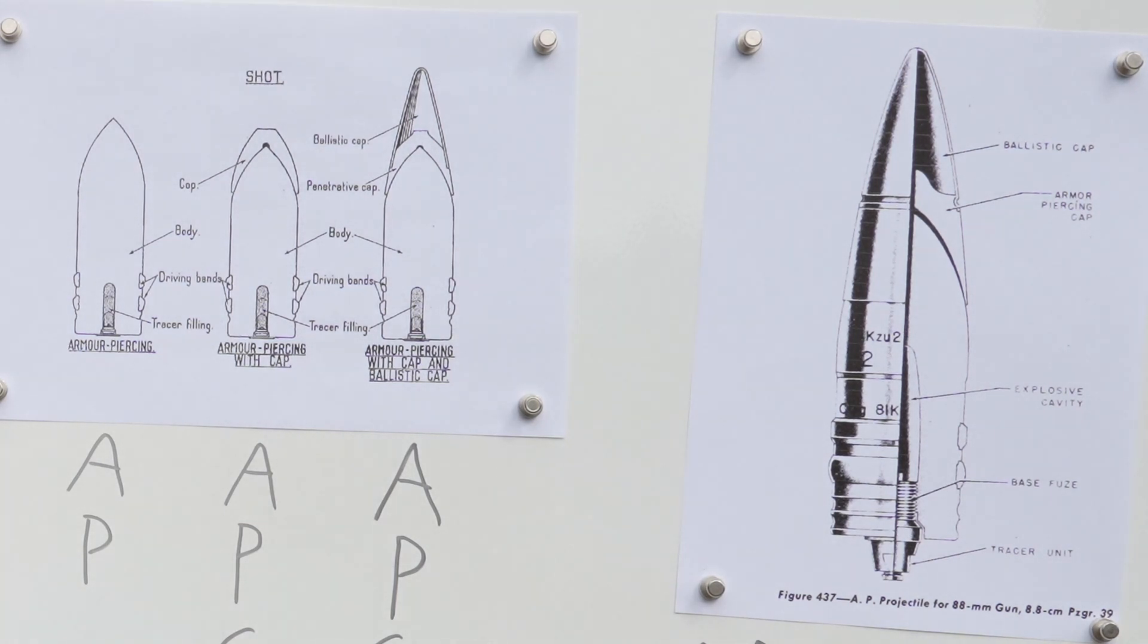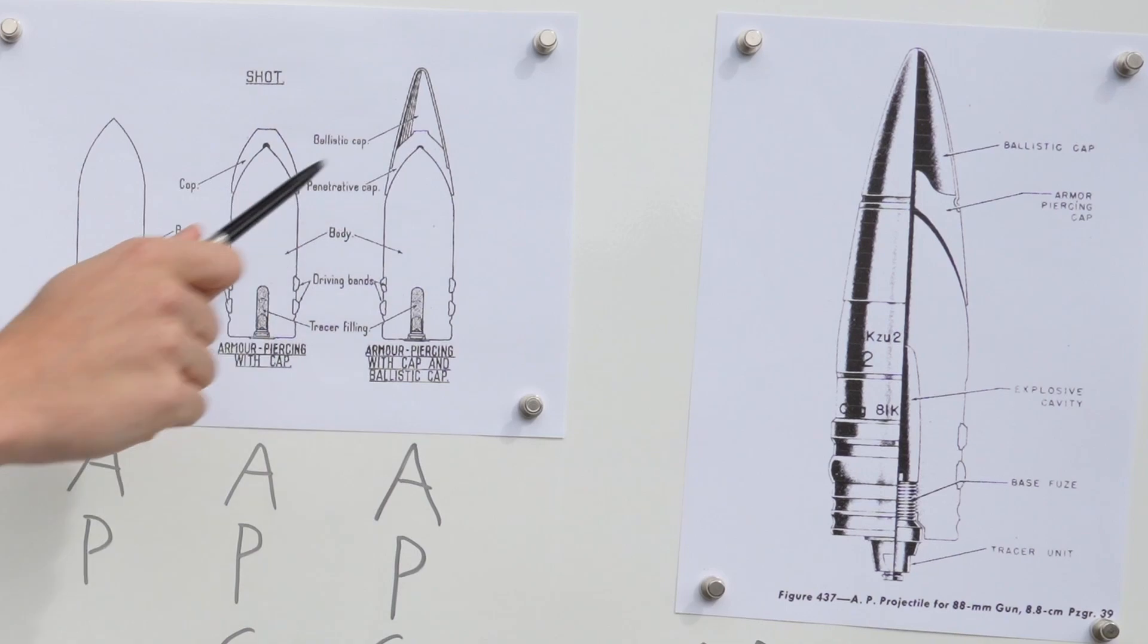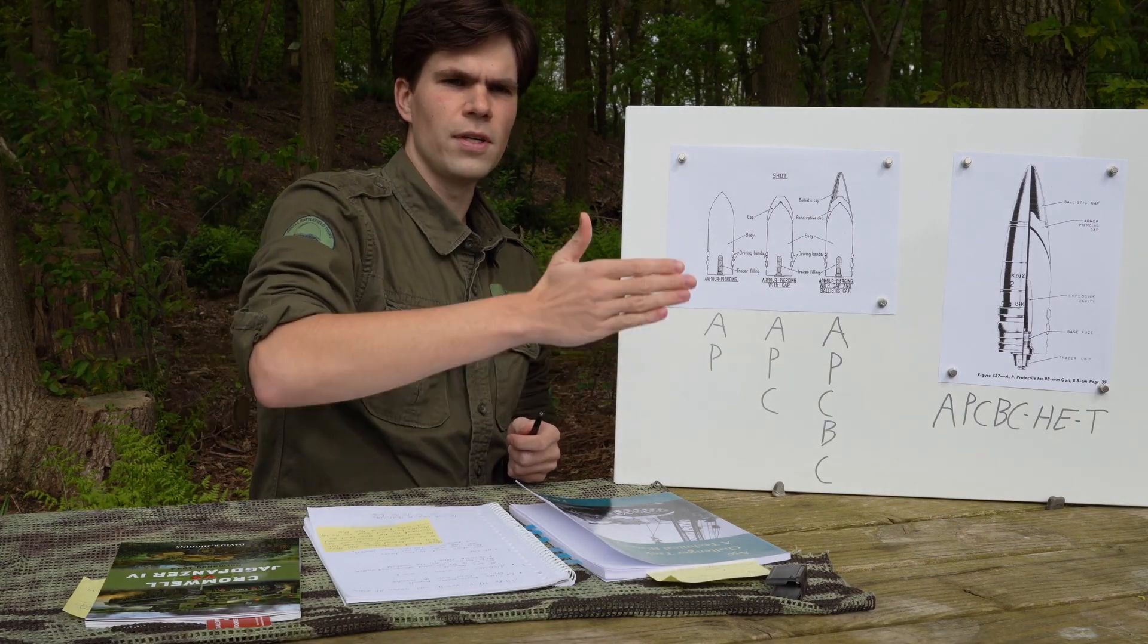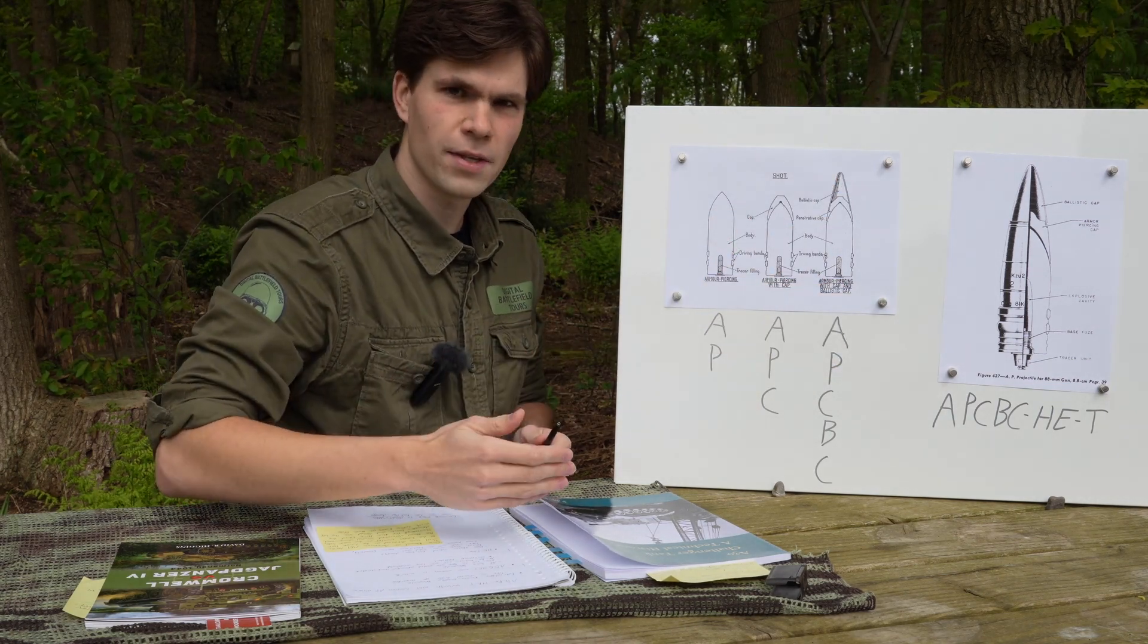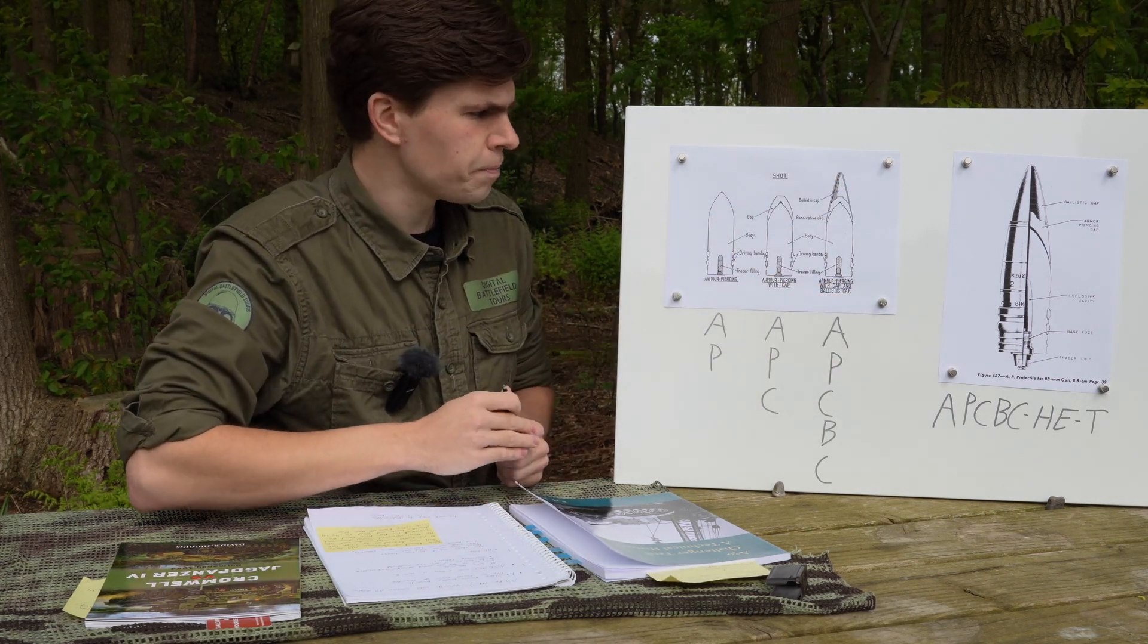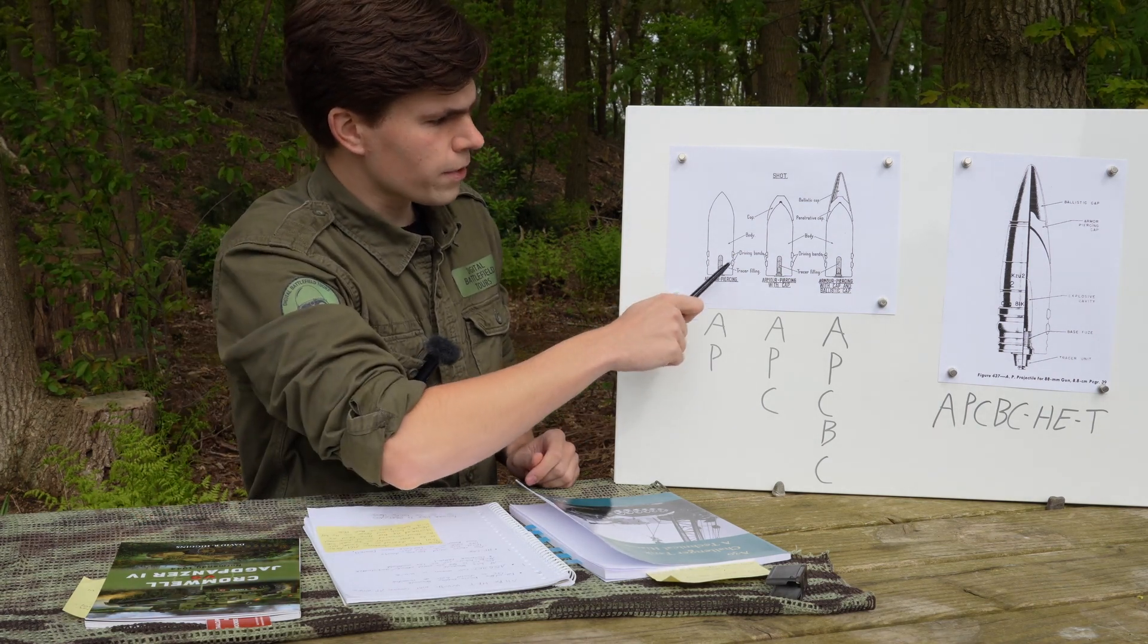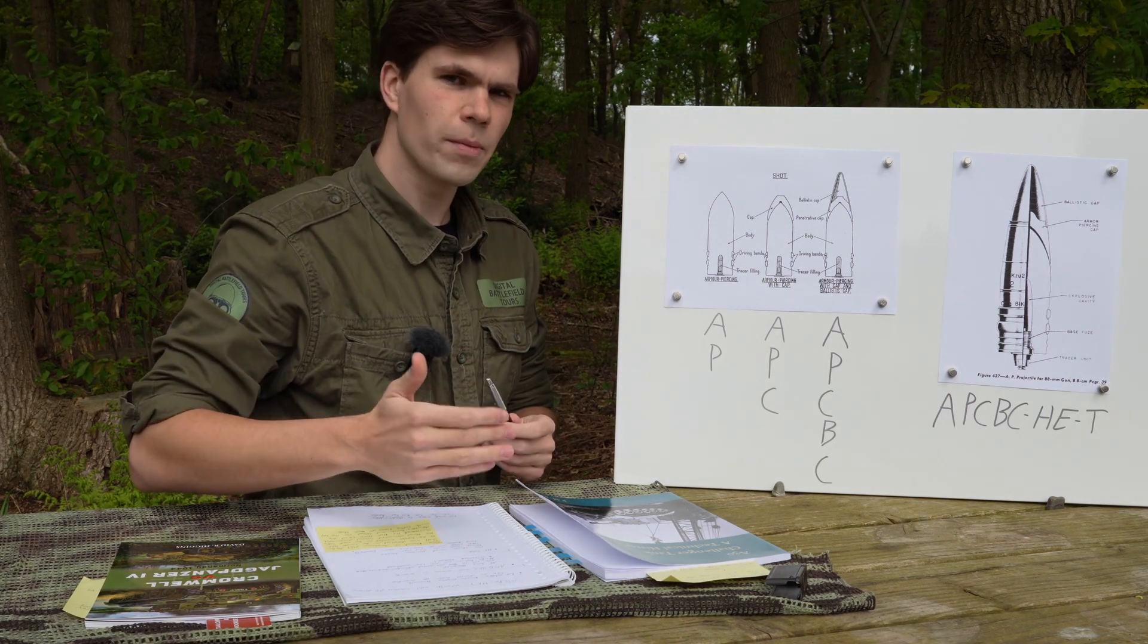Which is of fairly light construction so it doesn't weigh much. It has no real involvement in the actual armor penetration - that is still the cap and the actual shot. It's just there to maintain its kinetic energy as it flies through the air to improve aerodynamics. Ballistic cap, also called a wind chute.